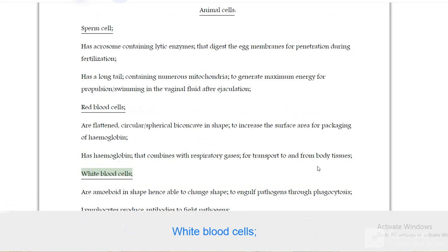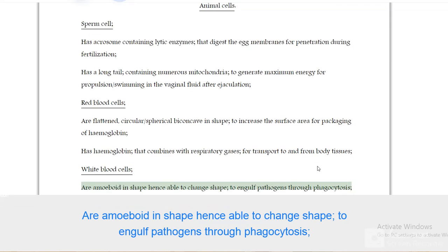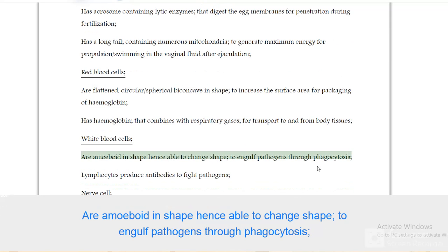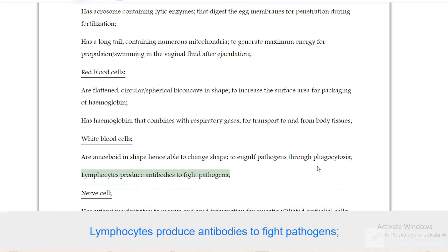White blood cells are amoeboid in shape, hence able to change shape to engulf pathogens through phagocytosis. Lymphocytes produce antibodies to fight pathogens.